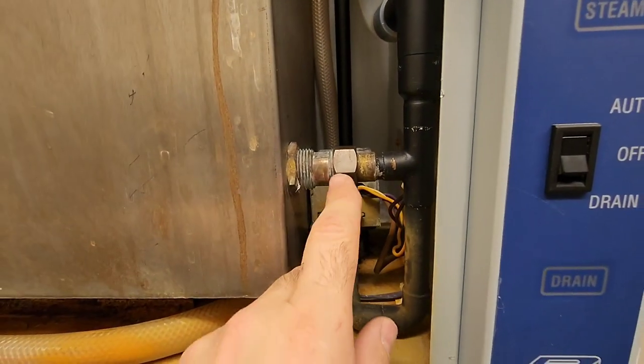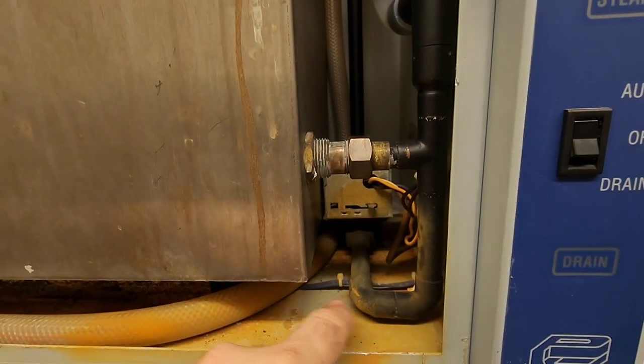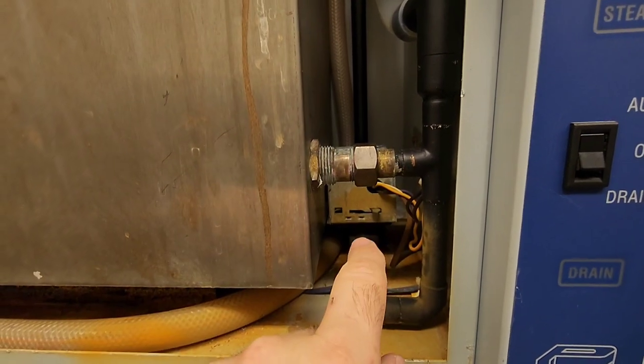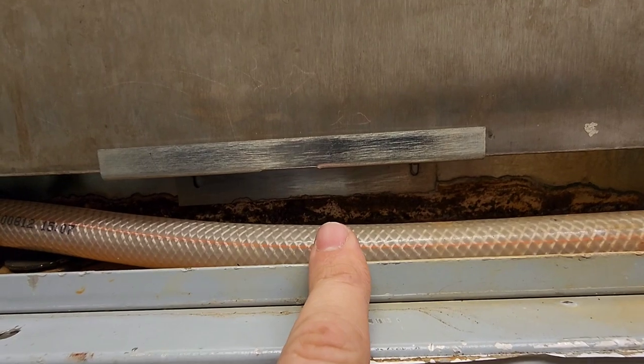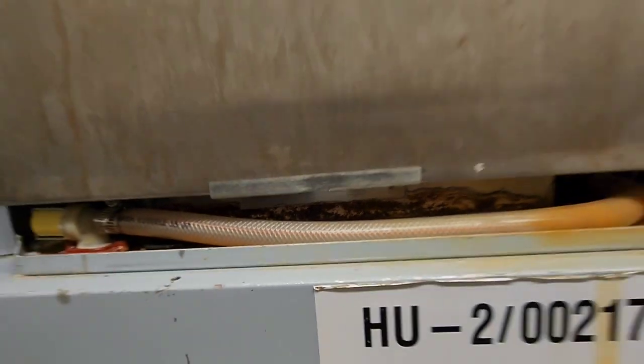So let's just make sure that we disconnect this union here. This is where it fills and drains right here. So we've got to disconnect this and there's a retainer plate here, a couple of Phillips screws and we remove this and that's it.